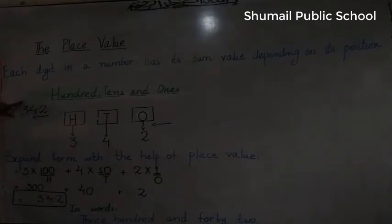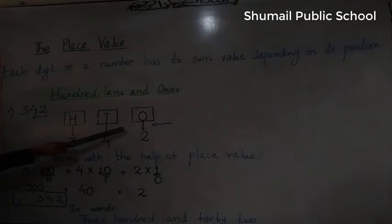What is the place value of 3? This will be explained in block form. What is the place value? The place value of 2 is ones, of 4 is tens, and of 3 is hundreds.